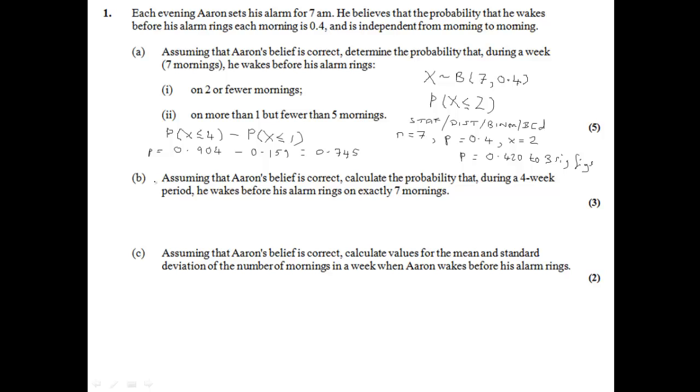Okay moving on to part B. We're now looking at the probability that during a four-week period he wakes before his alarm rings on exactly seven mornings. Well there's all sorts of different ways that he could wake on exactly seven mornings. It could be the first seven mornings, it could be the last seven, it could be the first, third, fifth, etc. Lots of different ways. We have a way of working out how many different ways he can wake on seven mornings out of 28.